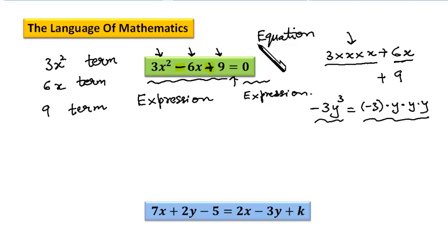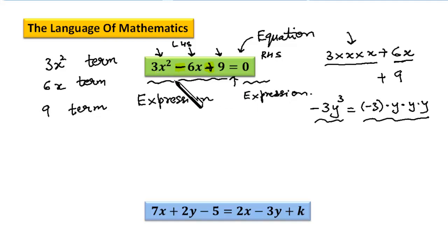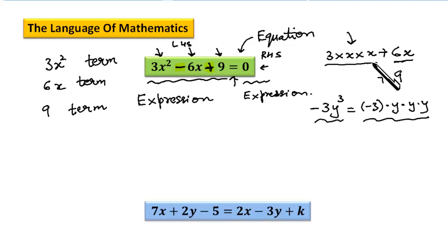An equation is something with an equal to mark in between. An equation has two sides — the left hand side and the right hand side. Here the right hand side is just 0. On both sides we have expressions, and expressions may contain one or many terms. The right hand side contains one term, but the left hand side contains three terms. Terms may be composed of multiplications or divisions, but adding or subtracting creates different terms.